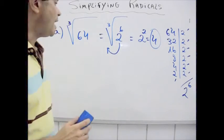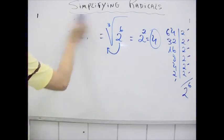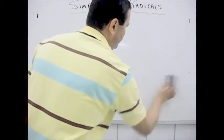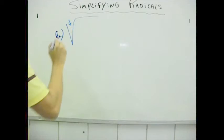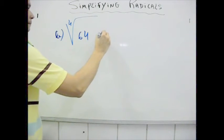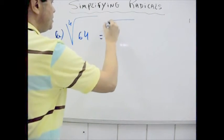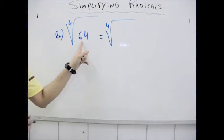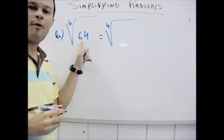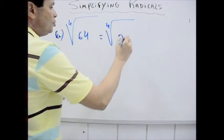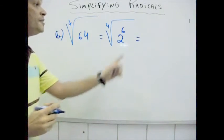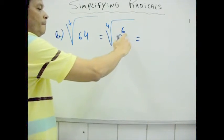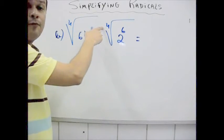Let's do the 2nd example: 4th root of 64. As we have seen before, I can represent 64 as 2 to the 6th power, but in this case, 6 is not divisible by 4.